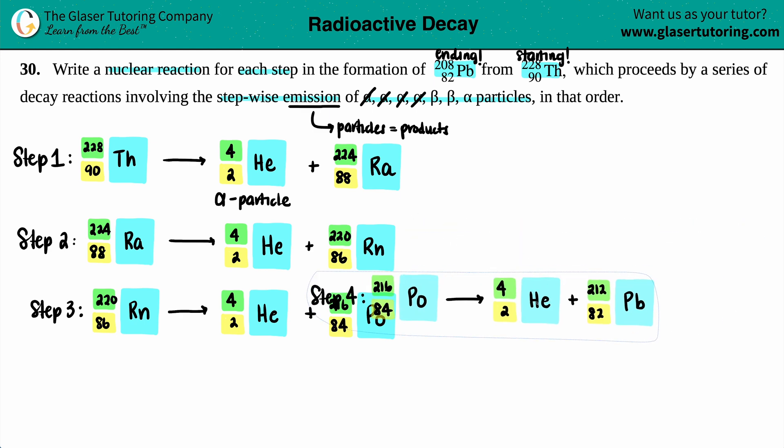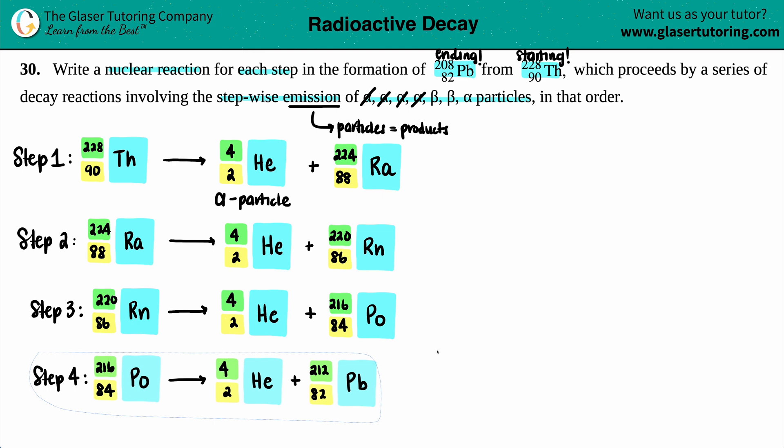Now we're going to be entering beta territory. Step five: Pick up where you last left off. We have the lead, Pb-212, 82. And now we're going to be emitting something different. Now we're going to be emitting a beta particle.